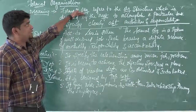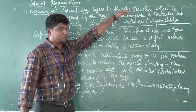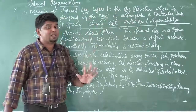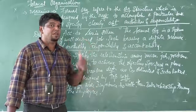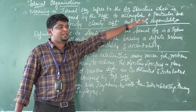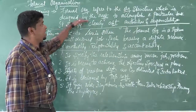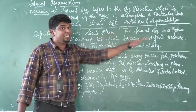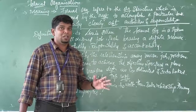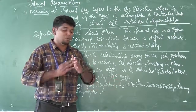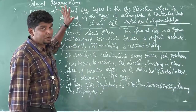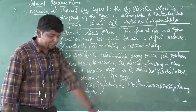Formal organization refers to the organization structure which is designed by the management to accomplish a particular task — whether it is an organizational goal, profit of the organization, or any particular objective. It has been specified clearly about the authorities and responsibility framed by the top level management, whether it's a CEO, MD, or general body members. This is called formal organization — a clear set of rules and regulations framed by the top level management.